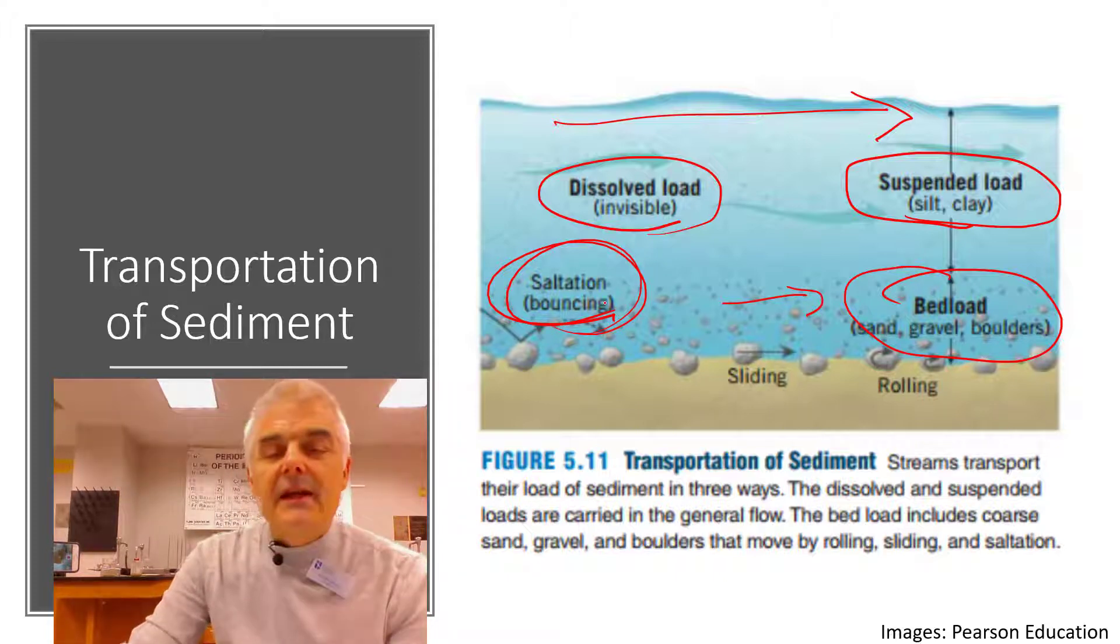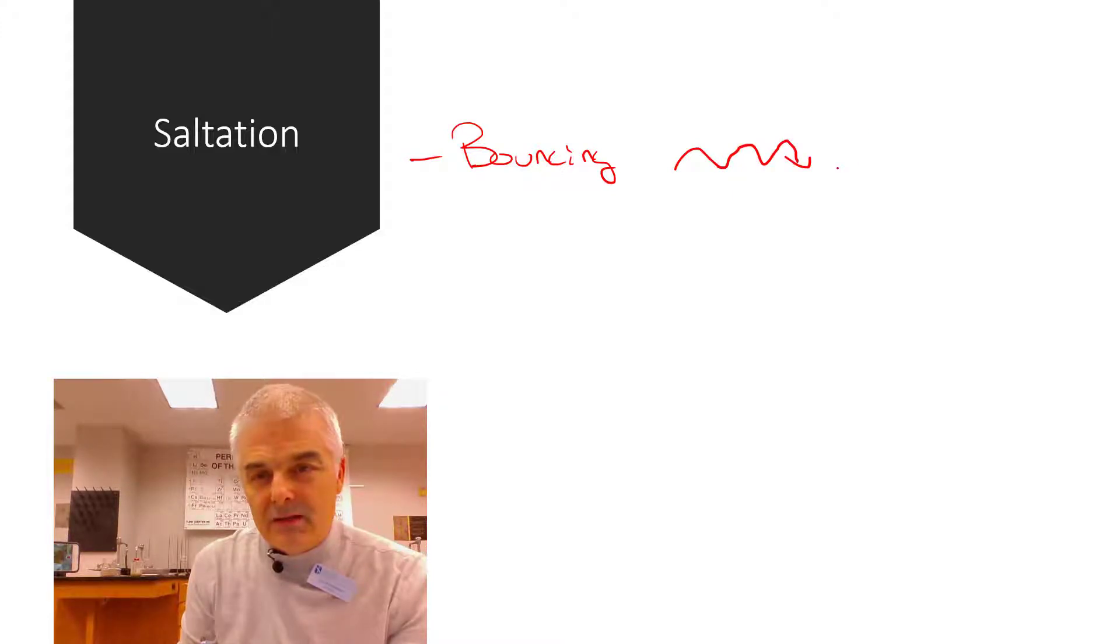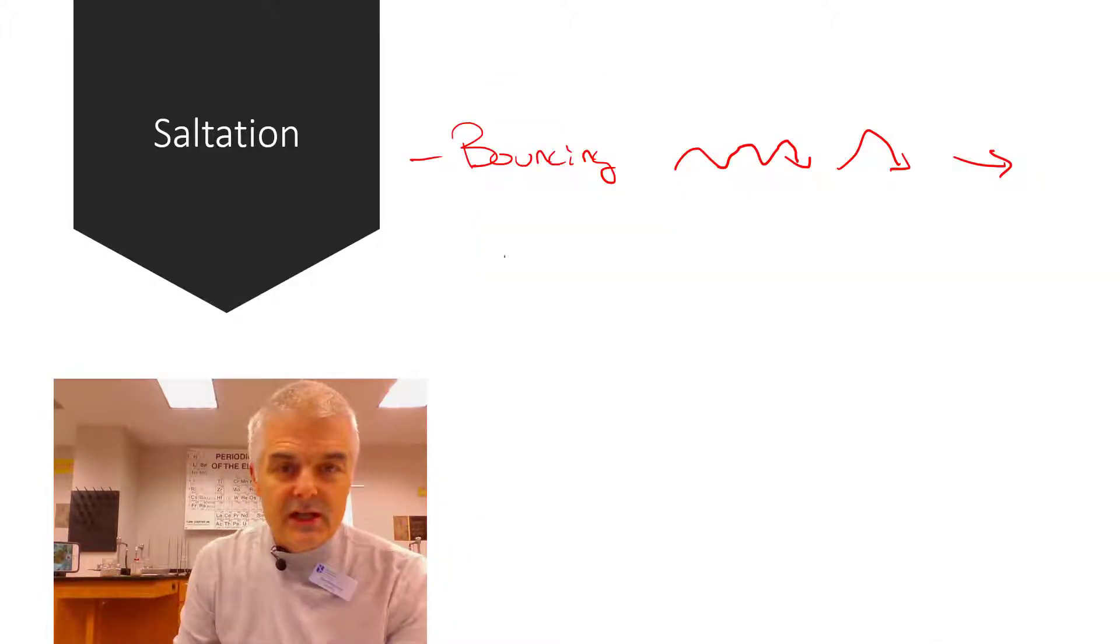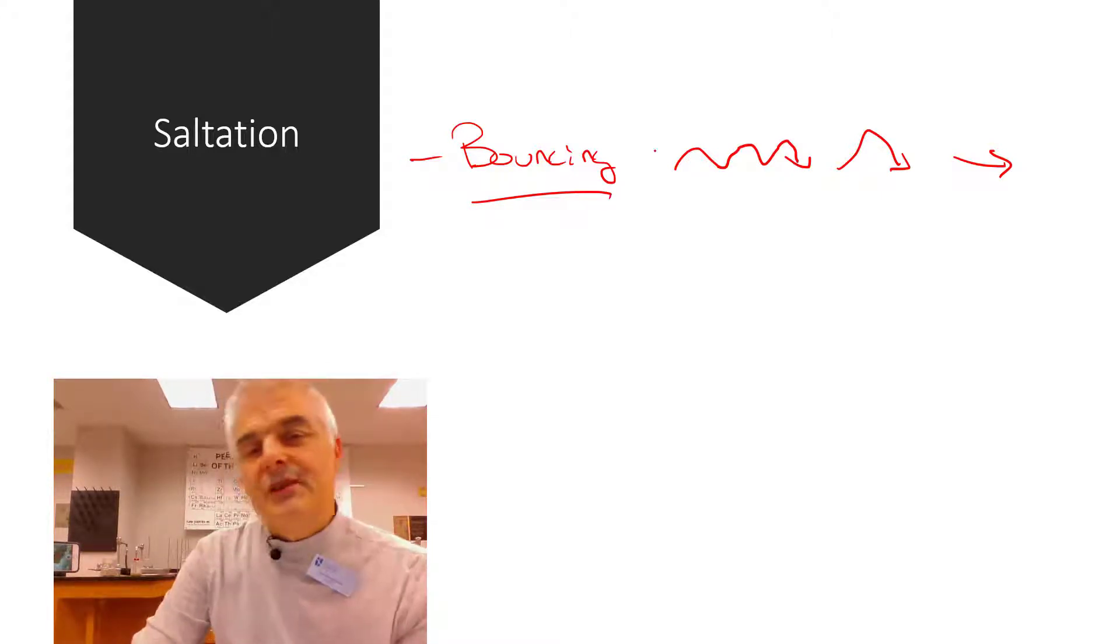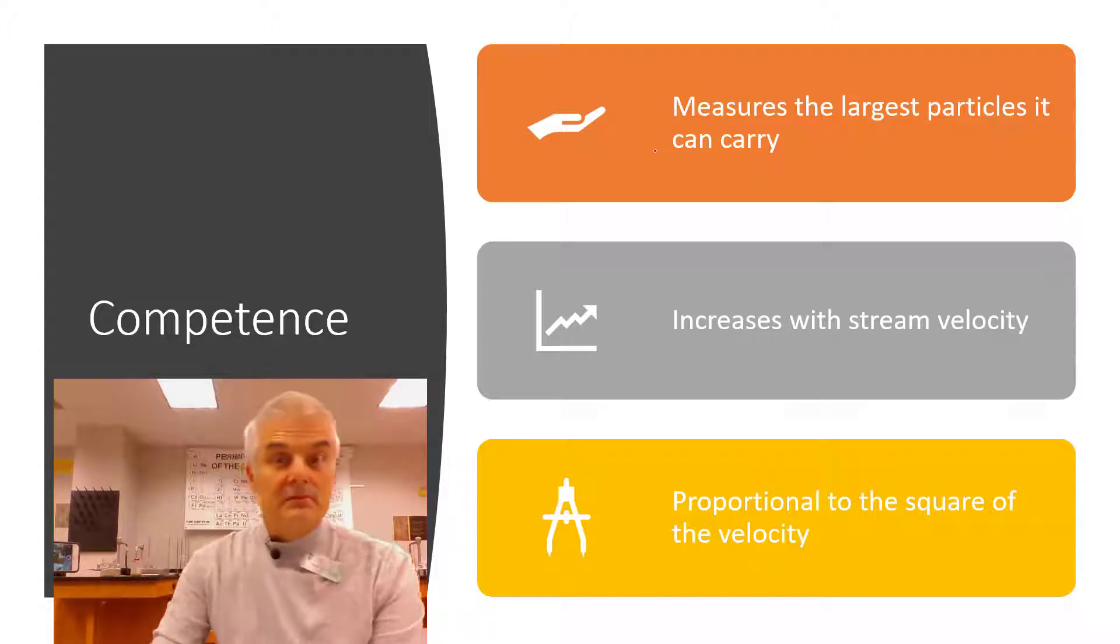It actually means, it comes from a Latin or something that means to bounce. So you've got the parts that are bouncing, bouncing, bouncing, as they move down the river, and that's called saltation, bouncing. So the key term in saltation is these are the substances, and they tend to be part of the bed load, that are bouncing, bouncing, bouncing down the thing, ticker, ticker, squirrel.